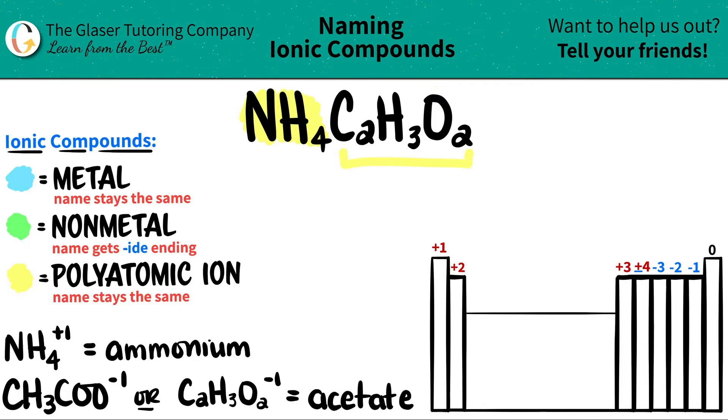And then C2H3O2, that's another polyatomic. Now it usually goes by C2H3O2, or it can go by CH3COO. They're the same thing, and that's the polyatomic called acetate. So I have another polyatomic here, and that's how it's ionic.